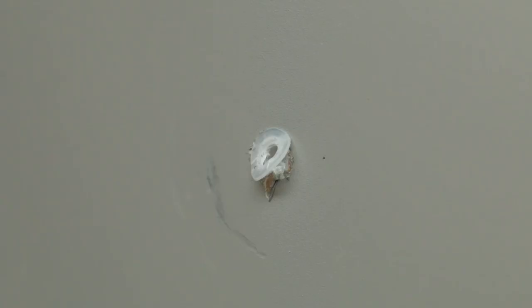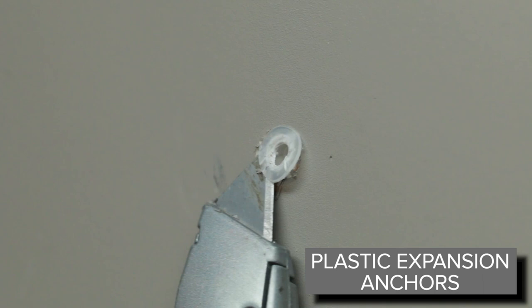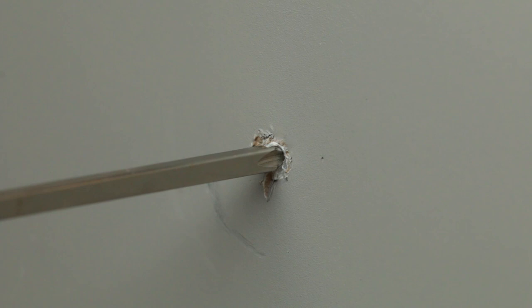Plastic expansion anchors are a little trickier to remove. Carefully use a box cutter blade to cut the lip of the anchor off and then take a screwdriver and just pop it into the other side of the wall.